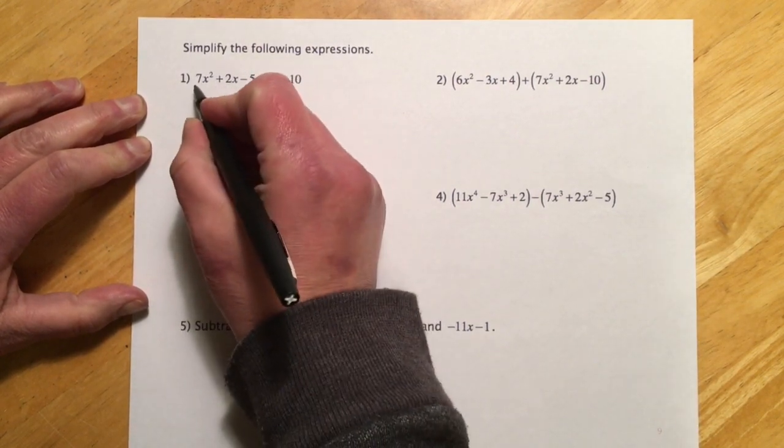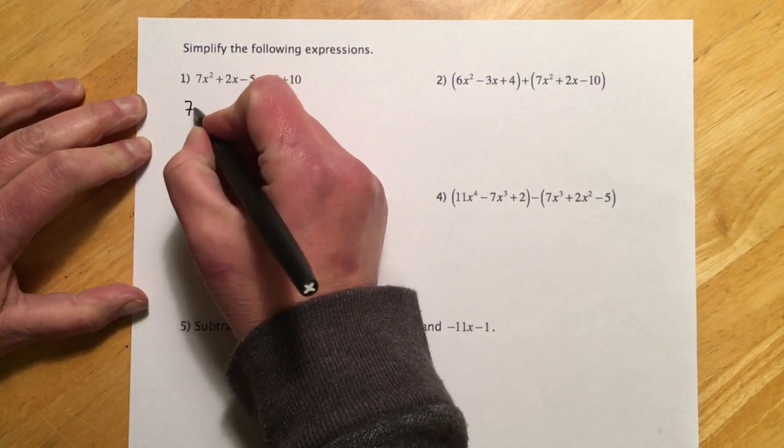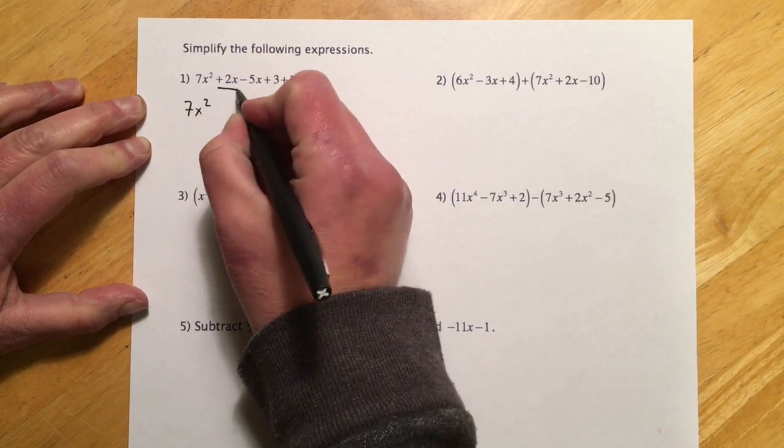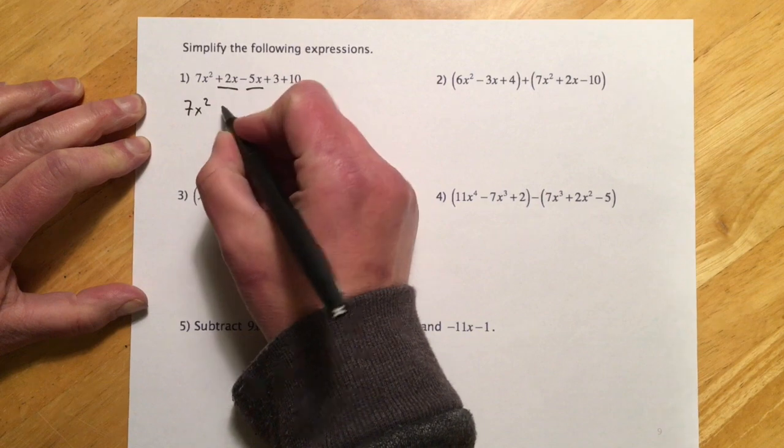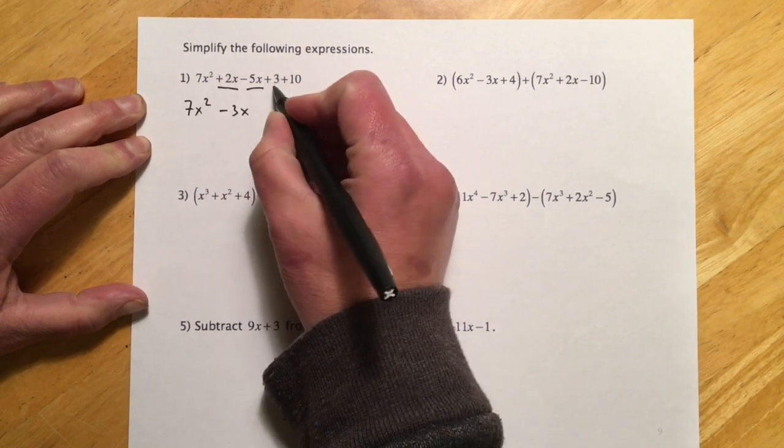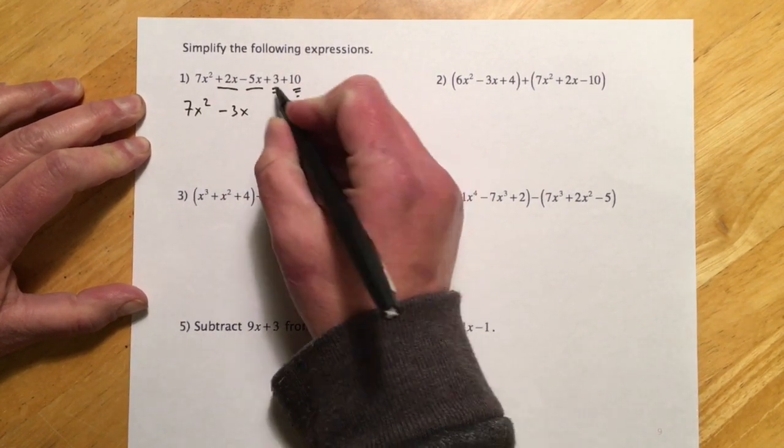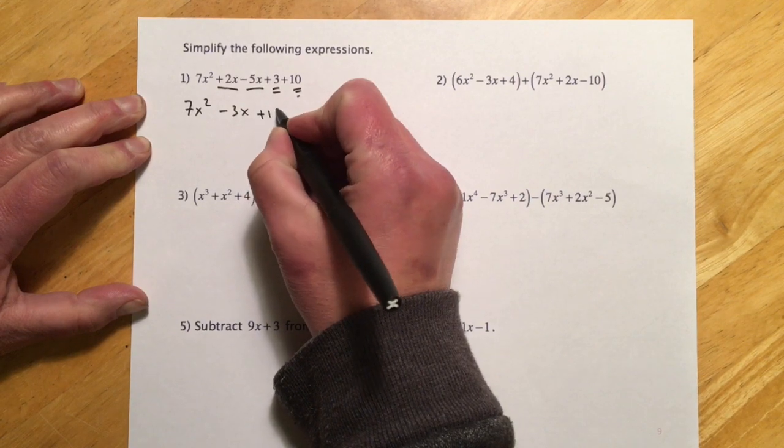So simplify the following expressions. What we're doing is basically just collecting like terms. So right here I've got a 7x squared. The plus 2x minus 5x go together just like we saw in chapter 1. So that's going to make a minus 3x. And then 3 and 10 like terms, so plus 13.